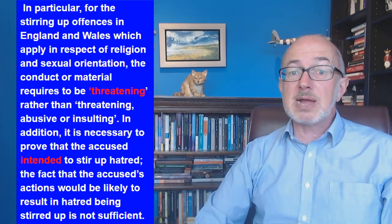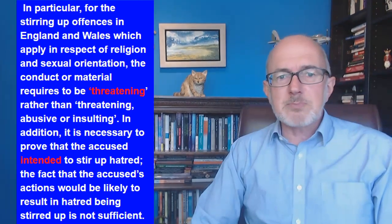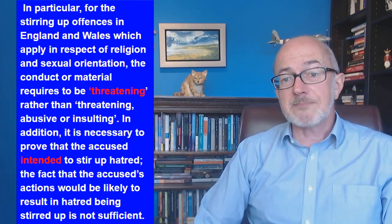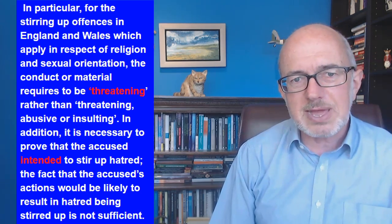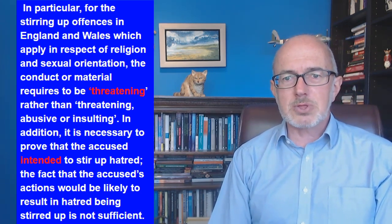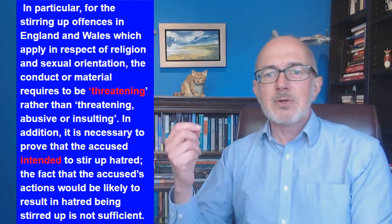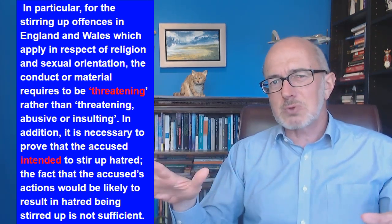Moving towards a comparison with the law in England. This is from the Scottish Government's documentation about stirring up hatred. For those stirring up offences in England and Wales which apply in respect of religion and sexual orientation, the conduct or material requires to be threatening rather than threatening, abusive or insulting. In addition, it's necessary to prove that the accused intended to stir up hatred. A fact that the accused actions would be likely to result in hatred being stirred up is not sufficient. In other words, the law in England is better than the law in Scotland because to be threatening is obviously a much narrower thing than threatening, abusive or insulting. And in the English law they have to prove intent.